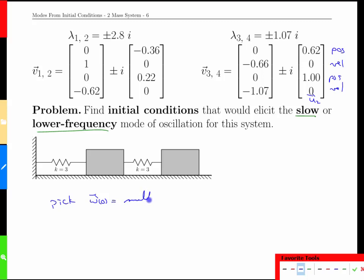What we're going to do is pick w at time zero equal to a multiple of the 0.62, 0, 1, 0, and what that would do or what that would mean, again this is the x1 position, this is the x2 position, that would mean moving this mass out 0.62 of a meter, moving this one out further.